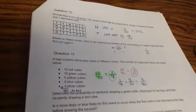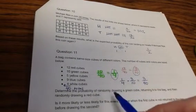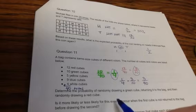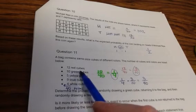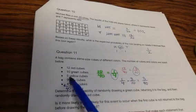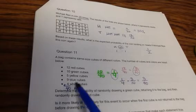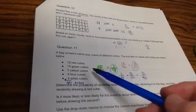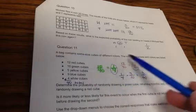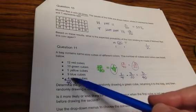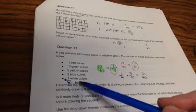Question 11. Bag contains the same size cubes of different colors. The number of cubes and colors are listed below. So 12 red cubes, 10 green, 5 yellow, 9 blue, and 4 white. So the first thing you want to find out is how many total there are because it doesn't say it up above. So add all these together. You'll be able to use your calculator function and you get 40 total.